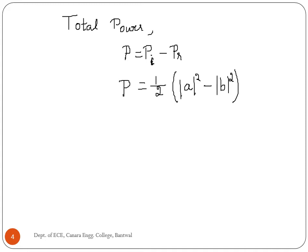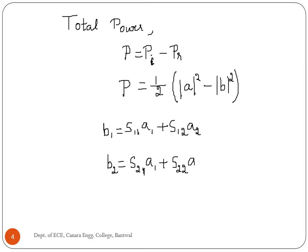For a two-port network, the relation between incident and reflected waves is expressed in terms of scattering parameters as: B1 = S11·A1 + S12·A2, and B2 = S21·A1 + S22·A2.